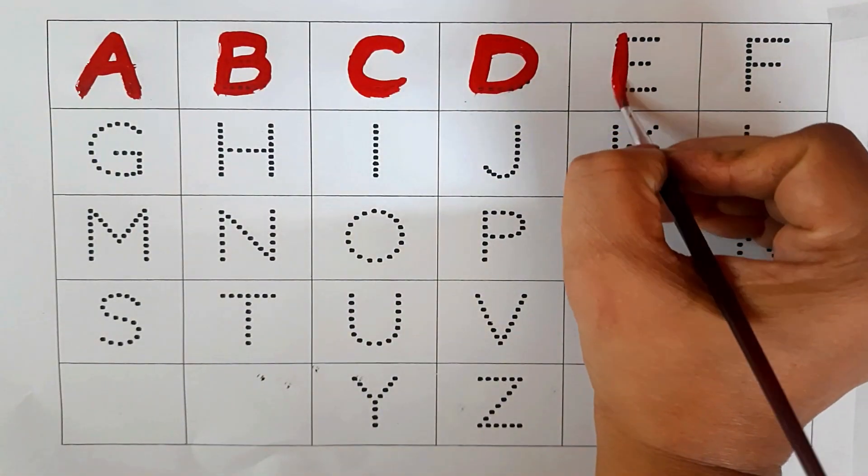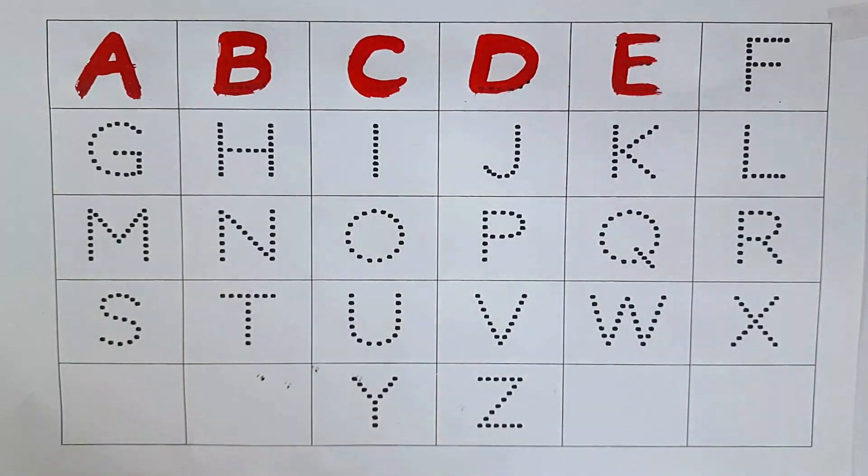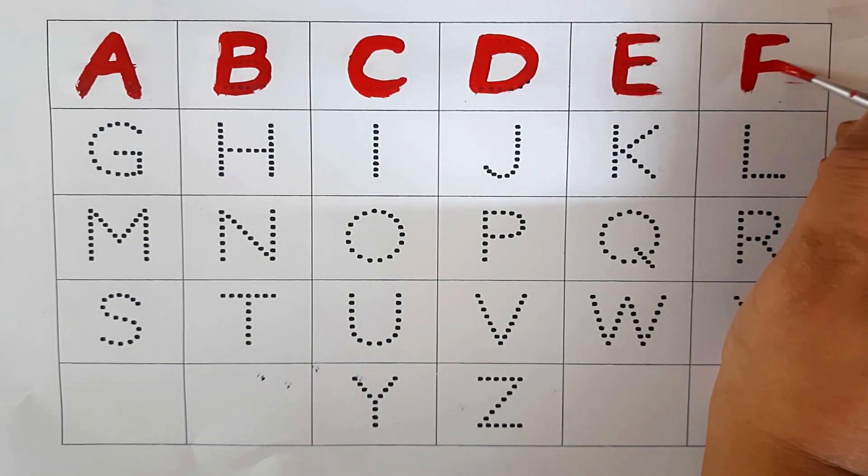Red color. E for Girl. Red color. F, F for Peach.